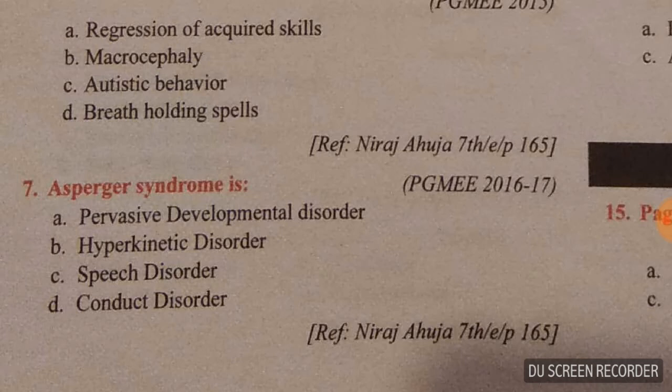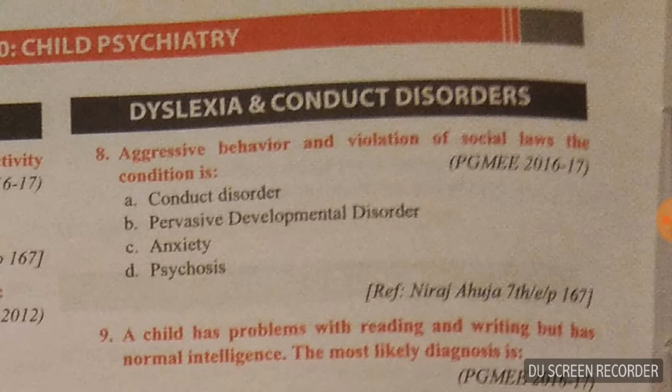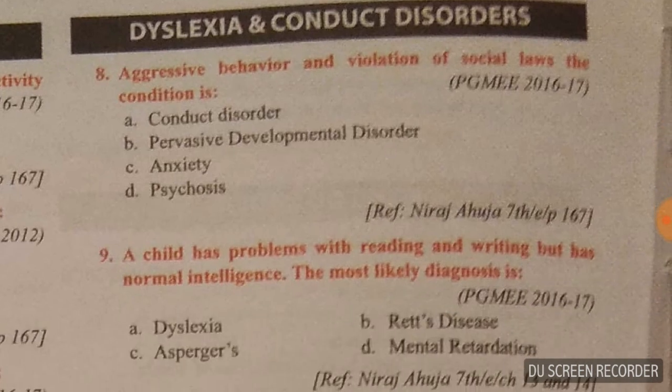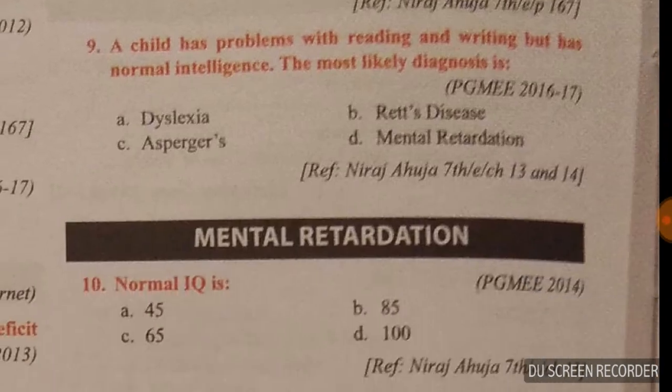Question number seven: Asperger's syndrome is a pervasive developmental disorder, so option A is the right answer. Question number eight: aggressive behavior and violation of social laws — the condition here is conduct disorder, option A is the right answer.